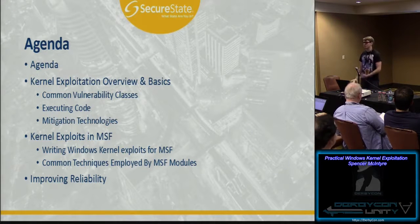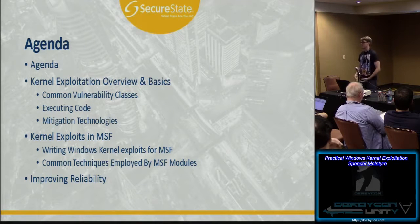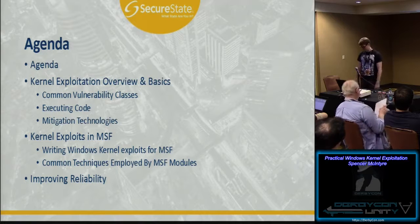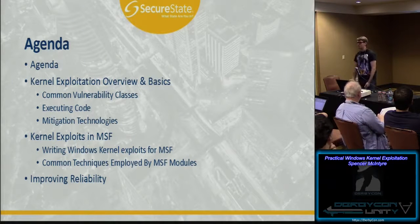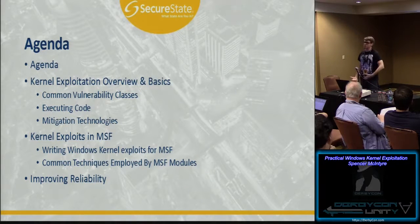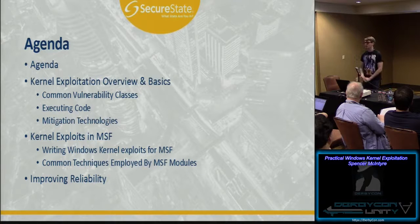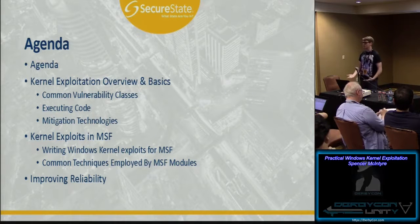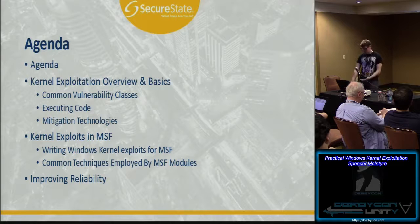We're going to talk about executing code. And then we're going to hit on mitigation technology — things like SMEP and some of the newer technologies and the problems we're running into. We're going to talk about kernel exploits in Metasploit framework, how they're actually implemented — the basic two different types of kernel exploits as implemented for the Metasploit framework. And then some of the common techniques that they use.